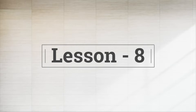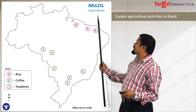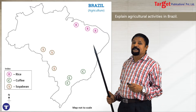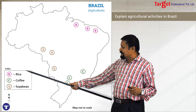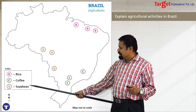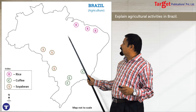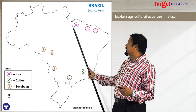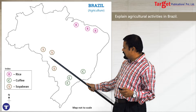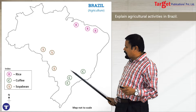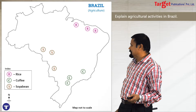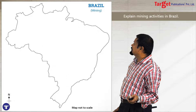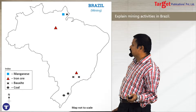Lesson number eight — the first topic is about agriculture. If the question is 'explain the agriculture in Brazil,' you can show a few major crops: rice, coffee, and soya bean. Show the rice cultivating areas, coffee cultivating areas — as you know, Brazil is a major coffee producing part of the world.